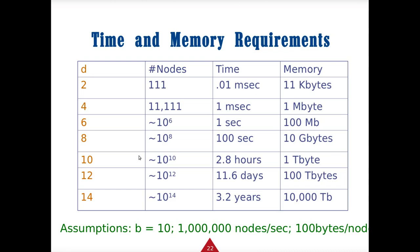For the time and memory constants of breadth-first: assuming 111 nodes, B equals 10, a million nodes per second, and 100 bytes per node — at depth D equals 2 we solve in one millisecond. Notice the exponential growth: as D becomes 4 it's still fast, but at D equals 6 it jumps to one second with approximately a million nodes. As D grows, we get exponential time and memory growth.